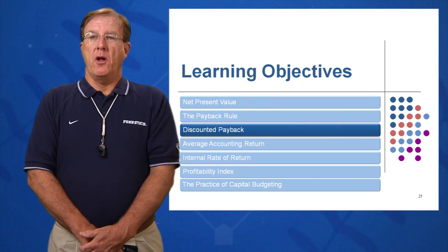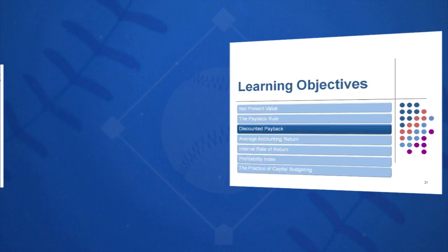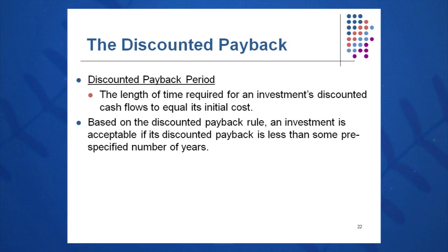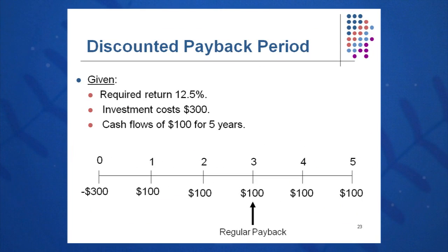Method number three in our learning objectives is discounted payback. The discounted payback is very similar to regular payback, except we discount the cash flows first and then find out when they pay the CFO back — when the discounted cash flows equal the initial cost. You need a discount rate from the CFO; in this example it is 12.5 percent.